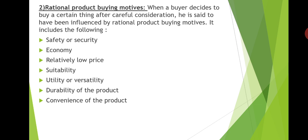Utility means the quality of the product which makes it suitable for a variety of uses. Utility of the product is one of the important rational buying motives. People purchase things which have utility or quality that can be put to varied uses — consumers buy goods and services which are of good quality. Durability: many products are bought on the basis of durability. For example, some buyers buy wooden furniture because, though costlier, it is more durable than ordinary furniture.